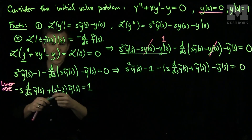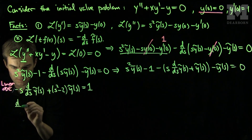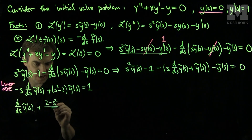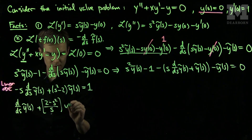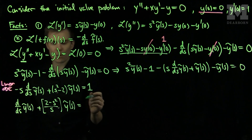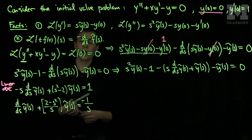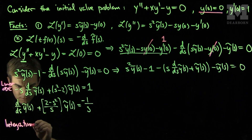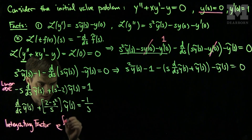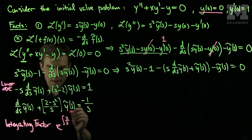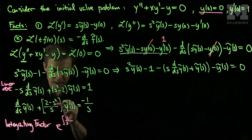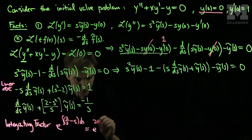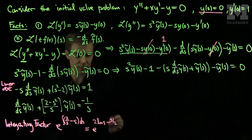What I need to do is divide by negative s to put it into normal form. Doing so, I will have d/ds of the Laplace Transform of y, plus (2 minus s²)/s times the Laplace Transform of y, equals negative one over s. Now we will find the integrating factor of this system. The integrating factor will be e to the integral of (2/s minus s) ds, which gives e to the (2 log s minus s²/2).